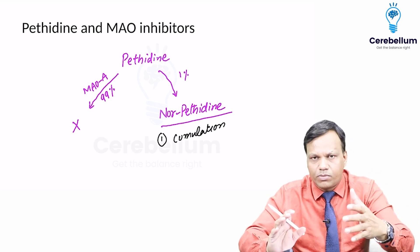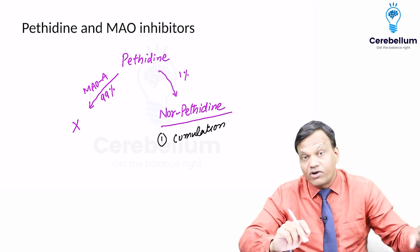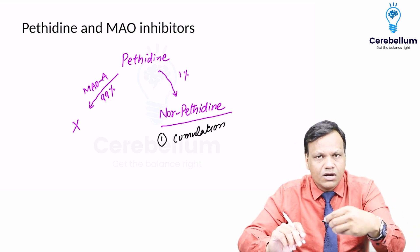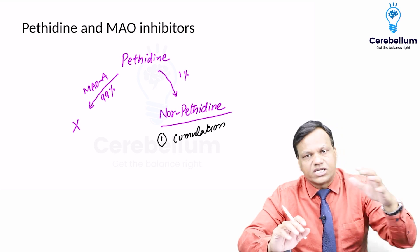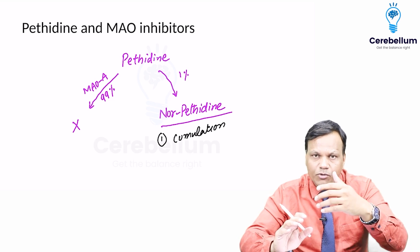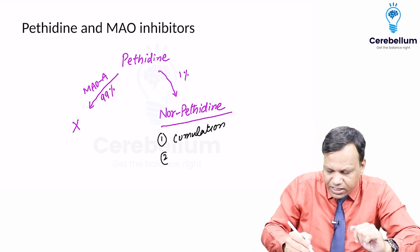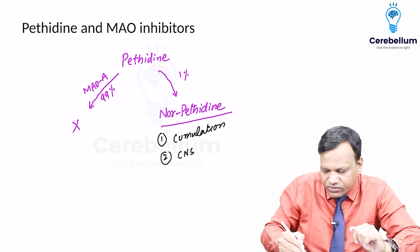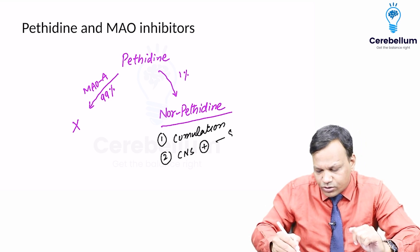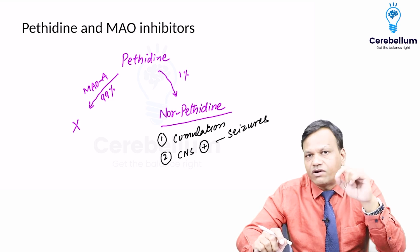If we give pethidine on day one, a little norpethidine is produced — no problem. On day two, most pethidine again becomes inactive, but another one percent of norpethidine is produced, and yesterday's norpethidine is still present. So it keeps accumulating daily, and if it reaches a sufficient level, it acts as a CNS stimulant, stimulating the brain and leading to seizures.